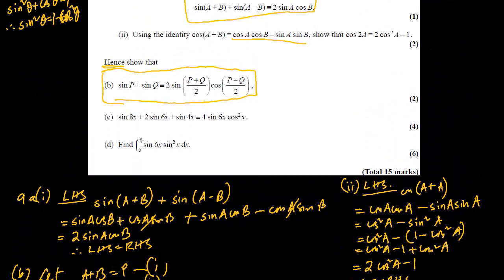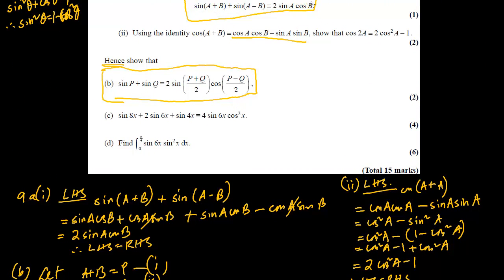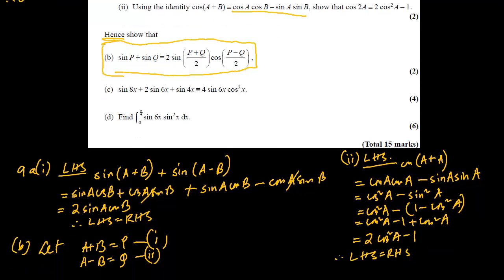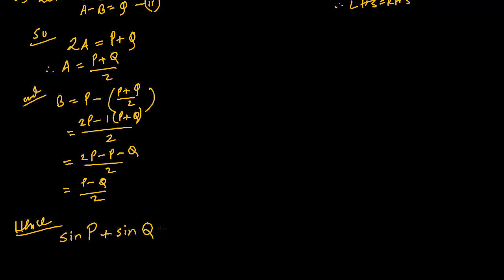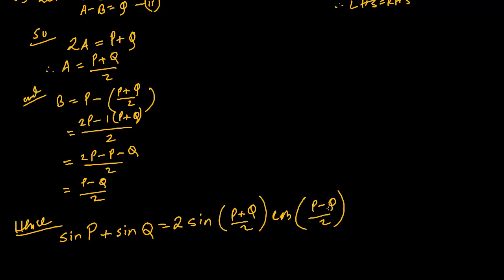Now we substitute back. Copying the result from 9A1 but replacing A+B with P, A−B with Q, and substituting the values of A and B: sine P + sine Q = 2 sine((P+Q)/2) cos((P−Q)/2). That's the result.